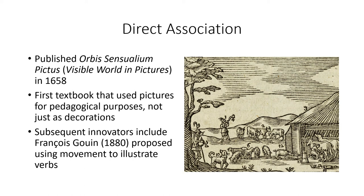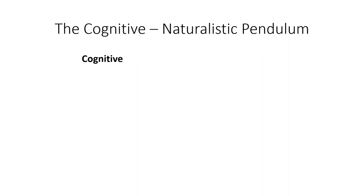Subsequent innovators along this line included François Goulin. In 1880, he proposed the notion of using movement to illustrate verbs and to act out a language while you were speaking it, and developed all kinds of exercises along those lines. You'll see his work echoed along with that of Comenius throughout the course. What this has led to overall is a pendulum, as it were, swinging between cognitive and naturalistic approaches to language learning.